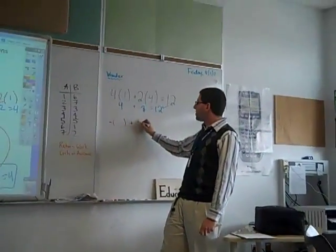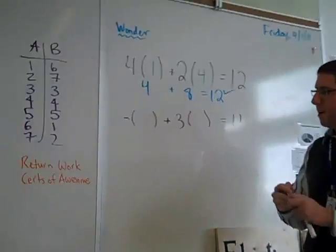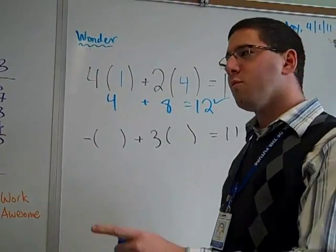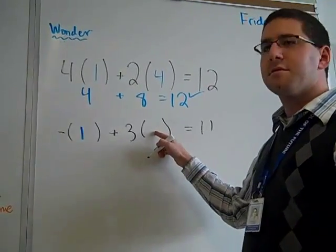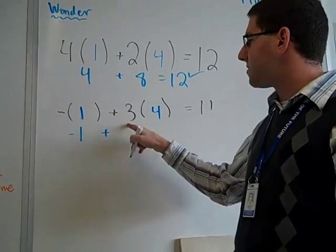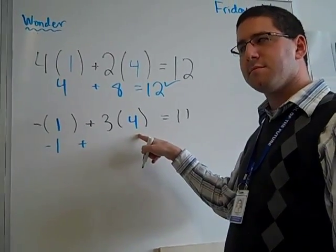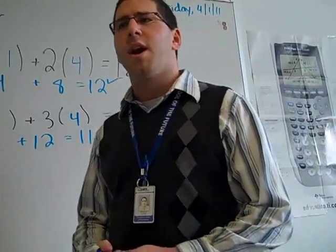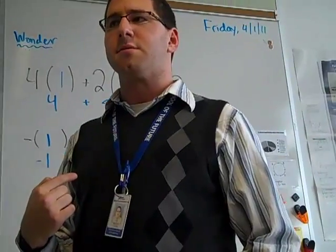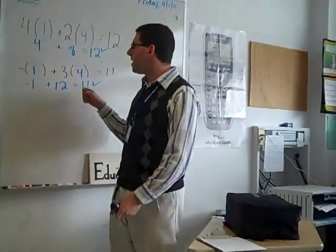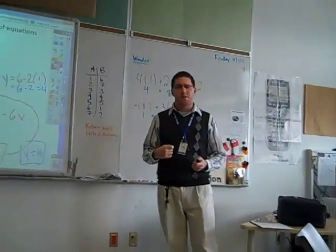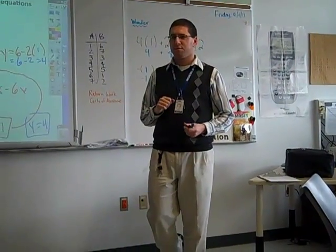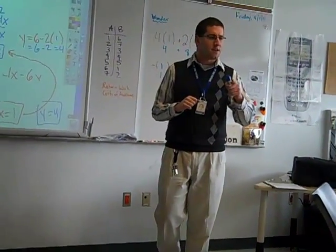Negative 1 plus 3 with the parentheses equals 11. What do I plug in here? I plug in my 1 and my 4. Negative 1 plus 3 times 4 — that's 12. Does that equal 11? Yes. I am correct. What did I do to check my work? I went back and plugged them in. If it is true, it is good. If it was not true, what would you do? Do it over again. Check yourself before you wreck yourself.